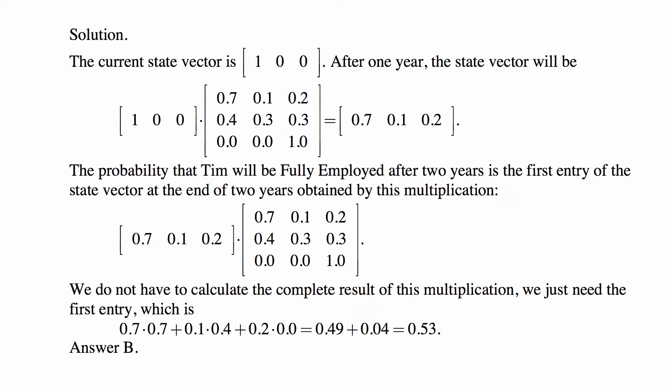The probability that Tom will be fully employed after two years is the first entry of the state vector at the end of two years, obtained by multiplying the state vector after one year by the transition matrix. We're only interested in the first entry, so we multiply the row vector by the first column. The result is 0.7×0.7 + 0.1×0.4 + 0.2×0.0 = 0.49 + 0.04 = 0.53, and that's answer B.